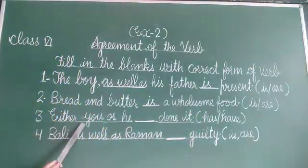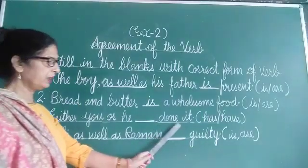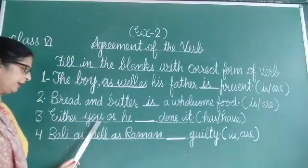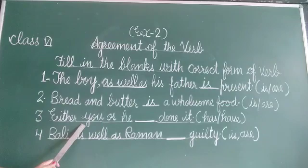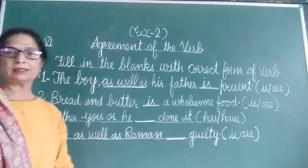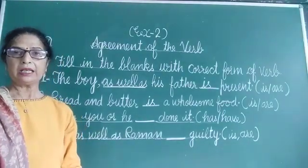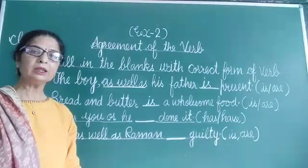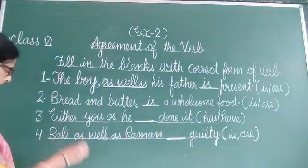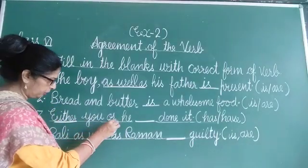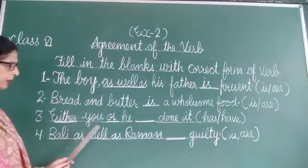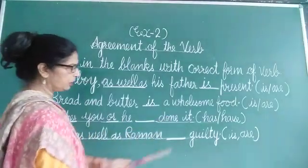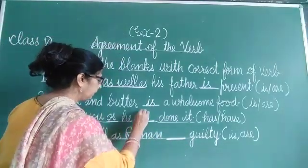Next: either you or he __ done it. The options are 'has' and 'have'. As you know, if you are getting in the sentence 'neither nor' or 'either or', then we always put the helping verb in singular number. In this sentence you are getting 'either' and 'or', so according to the rule you will put the singular verb 'has'.